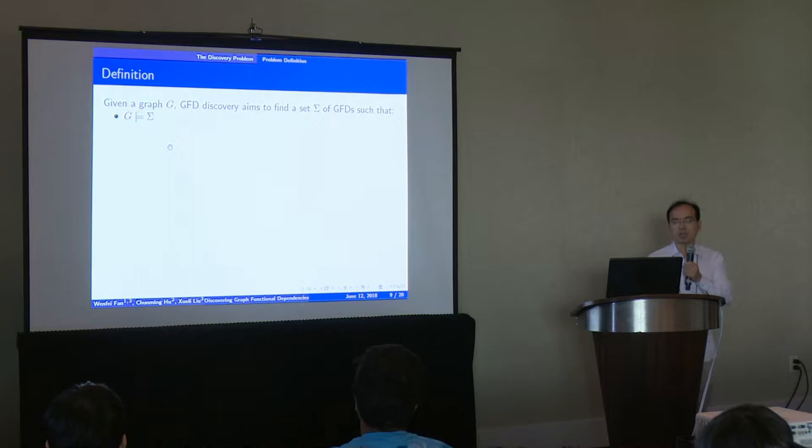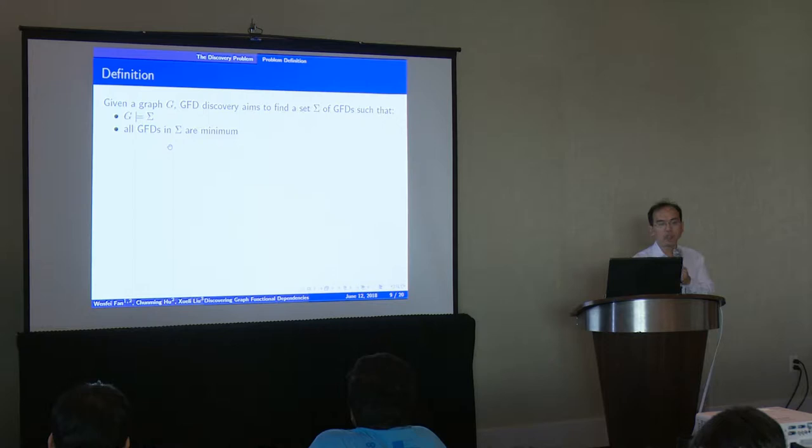And other inconsistencies can be caught in a similar manner. Having these notations, we can define the discovery problem. Given a graph, the GFD discovery is aimed to find a set of GFDs such that G satisfies the set. And second, all GFDs in the set are minimal, which means that we cannot remove any edge from the pattern or we cannot remove any literals from X.